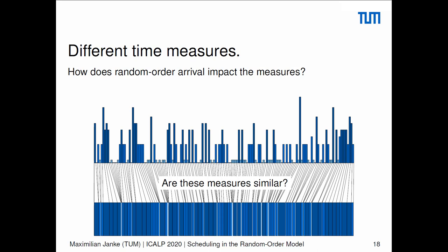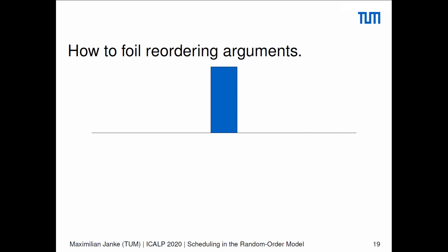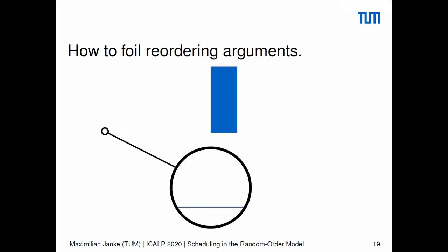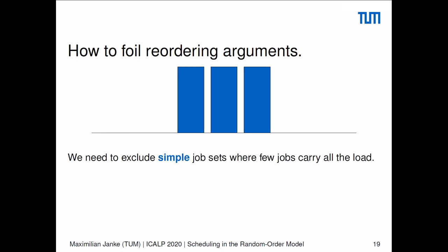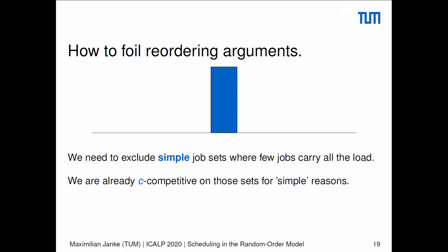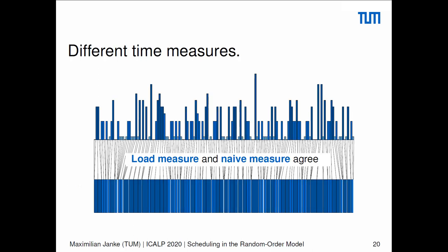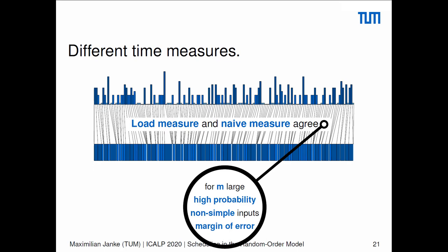The short answer is no. There are certain simple sequences we need to exclude — like one where there are very many tiny jobs and one job that dominates. Here these measures couldn't agree: the load measure would just look at the one large job, while the naive measure would see all the tiny jobs. We need to exclude simple sequences where few jobs hog all the processing volume. Luckily it is simple for us to show c-competitiveness on such sequences. After excluding these sequences, we may in fact say that the load measure and the naive measure agree — of course with some epsilon tolerance.